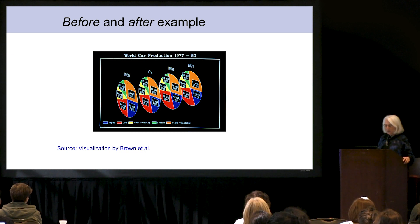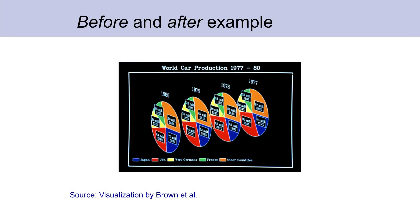What they show is, as I say, world car production. The blue is Japan, the red is USA, etc. Well, first of all,